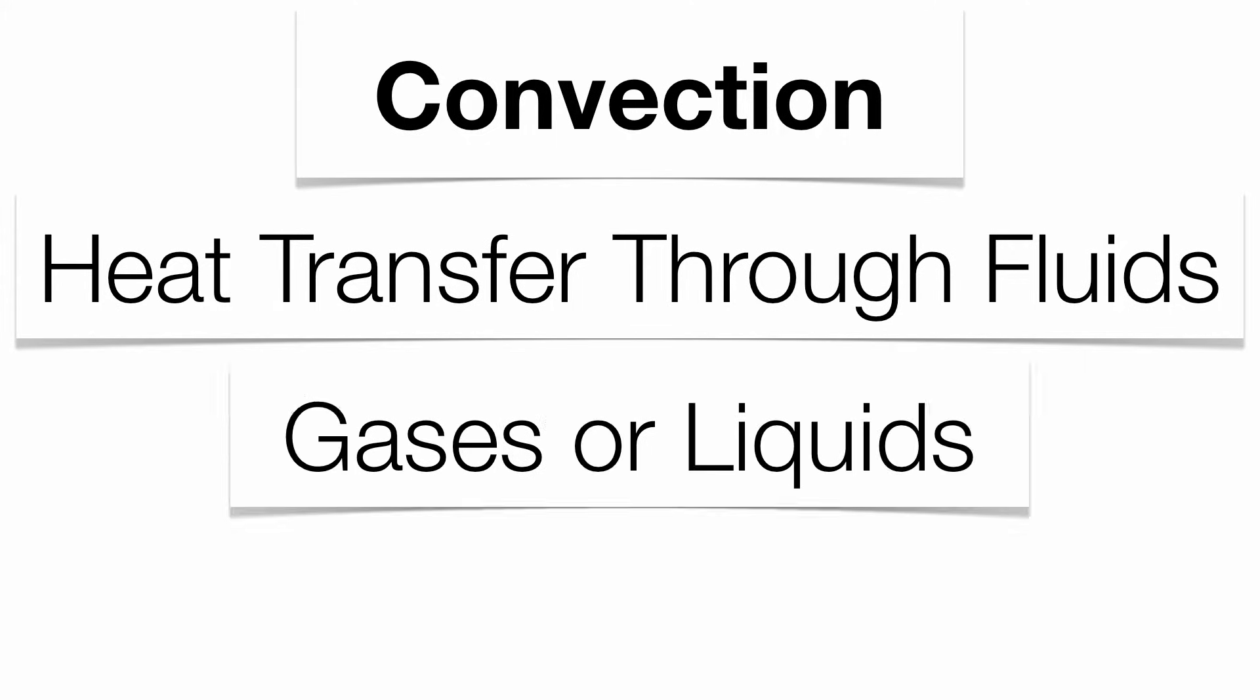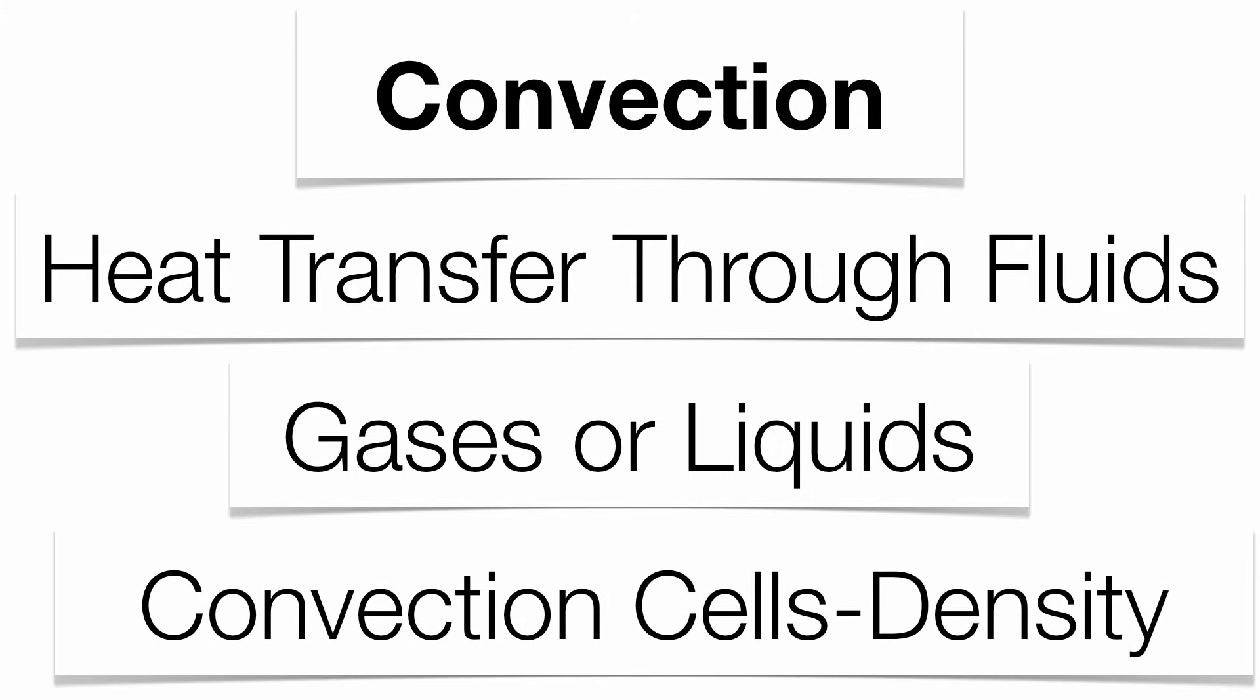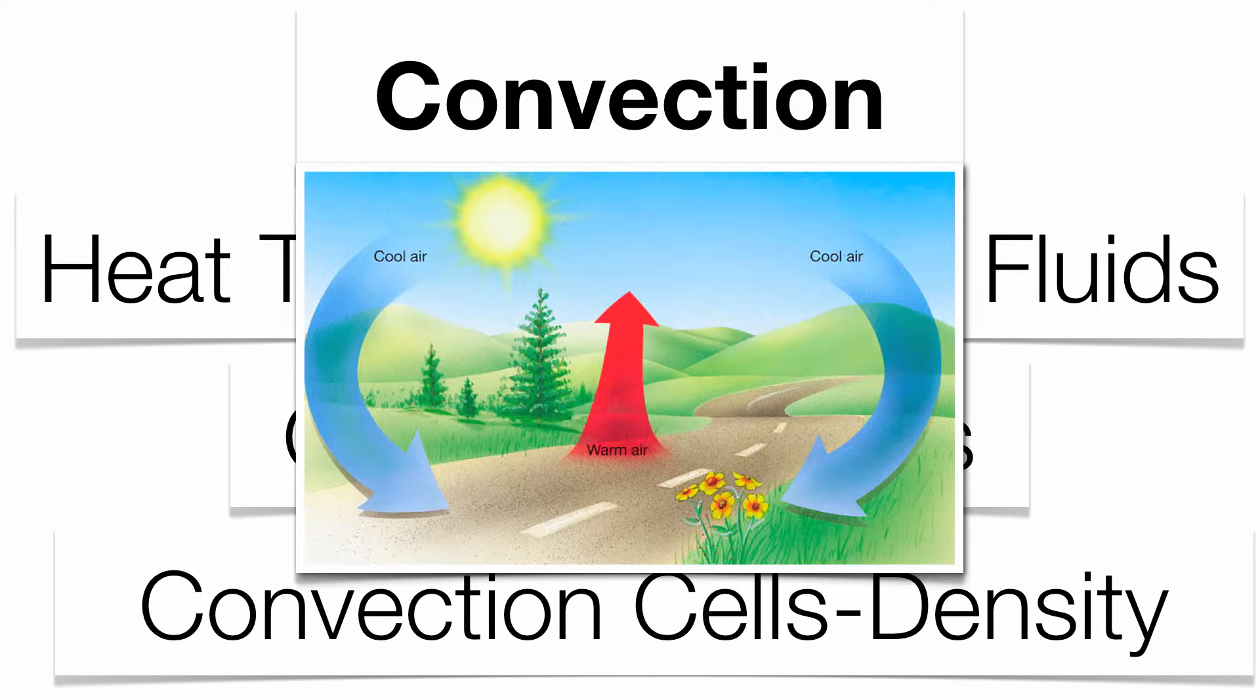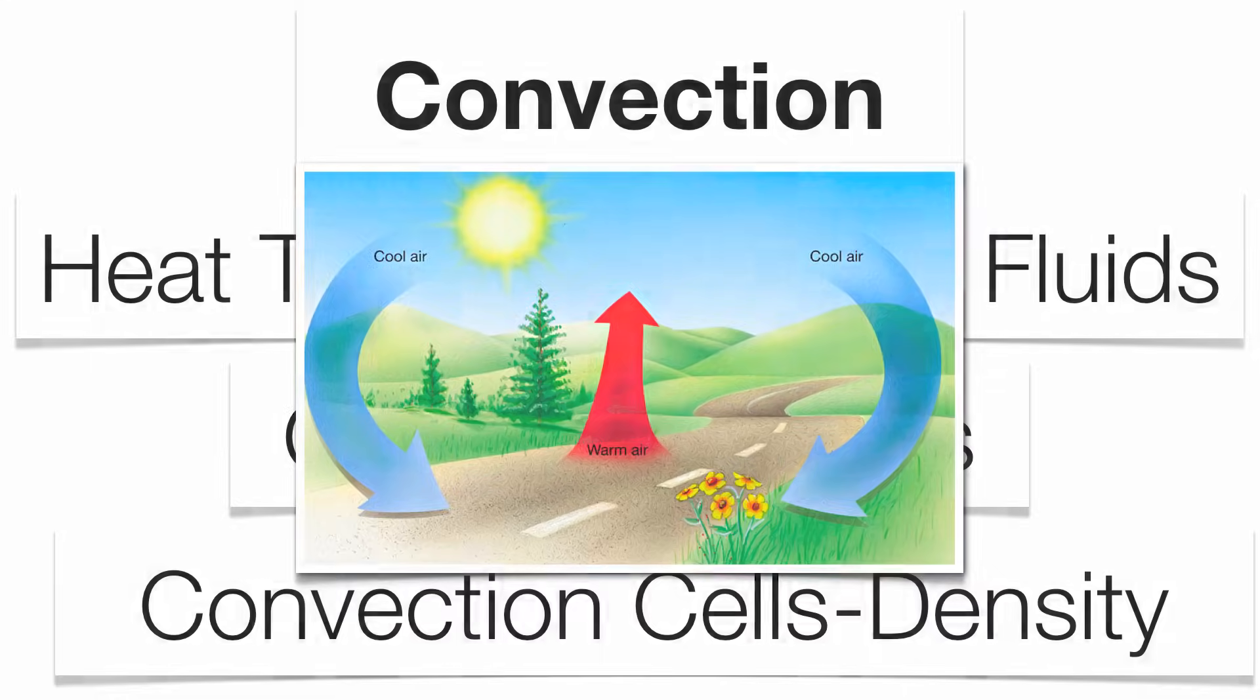The second form of transfer is convection. Convection is heat transfer through a fluid. Remember, anything that's a fluid is anything that flows, like a gas or a liquid. This concept has popped up a couple times. In plate tectonics, you get convection in the asthenosphere. You also get convection in your oceans that create ocean currents, and in the atmosphere that gives wind currents. You're dealing with density differences. Remember, low density rises and high density sinks. Think about how a lava lamp works.